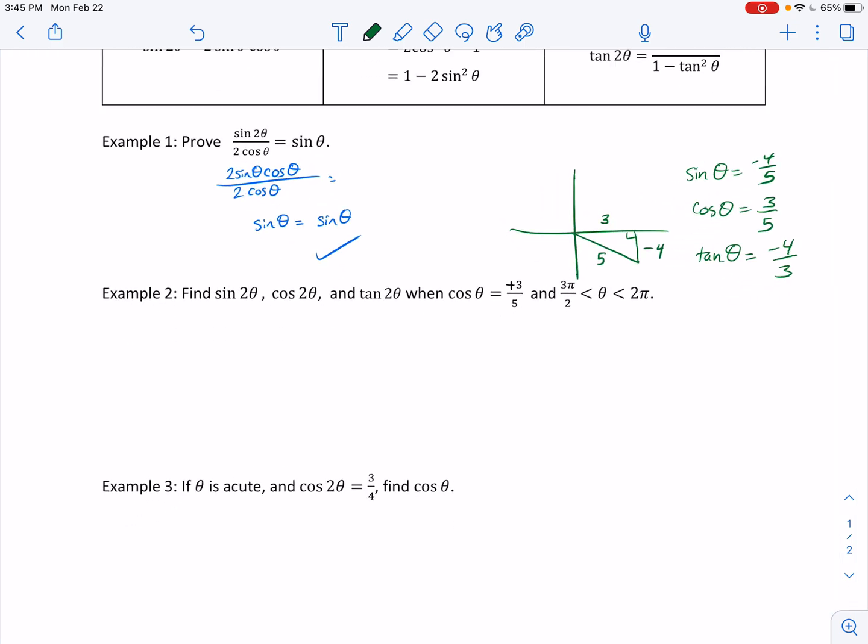Okay, so then I can find sine of two theta would be equal to two sine of theta cosine theta, which is two times, well, what did we say sine was? Negative four fifths. What did we say cosine was? We said three fifths. And so I have three times four is 12 times two is 24, negative 24 over 25, and we're done. Well, with that part.